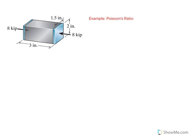Here we want to look at an example which is related to Poisson's ratio. We have a block that has a rectangular cross section subjected to a compressive load of 8 kip.